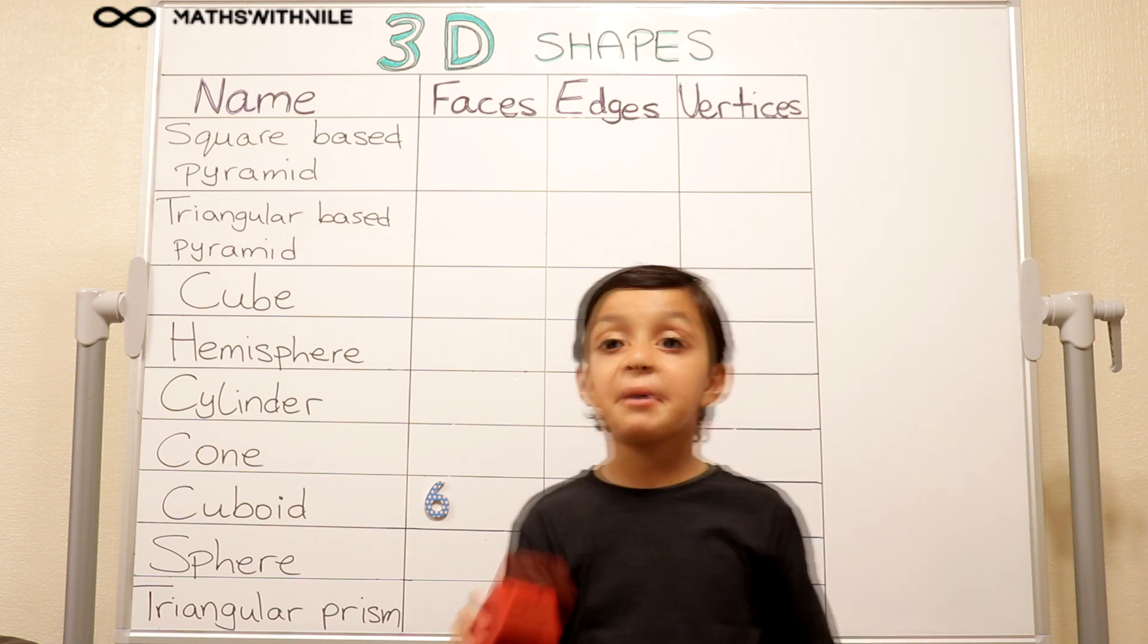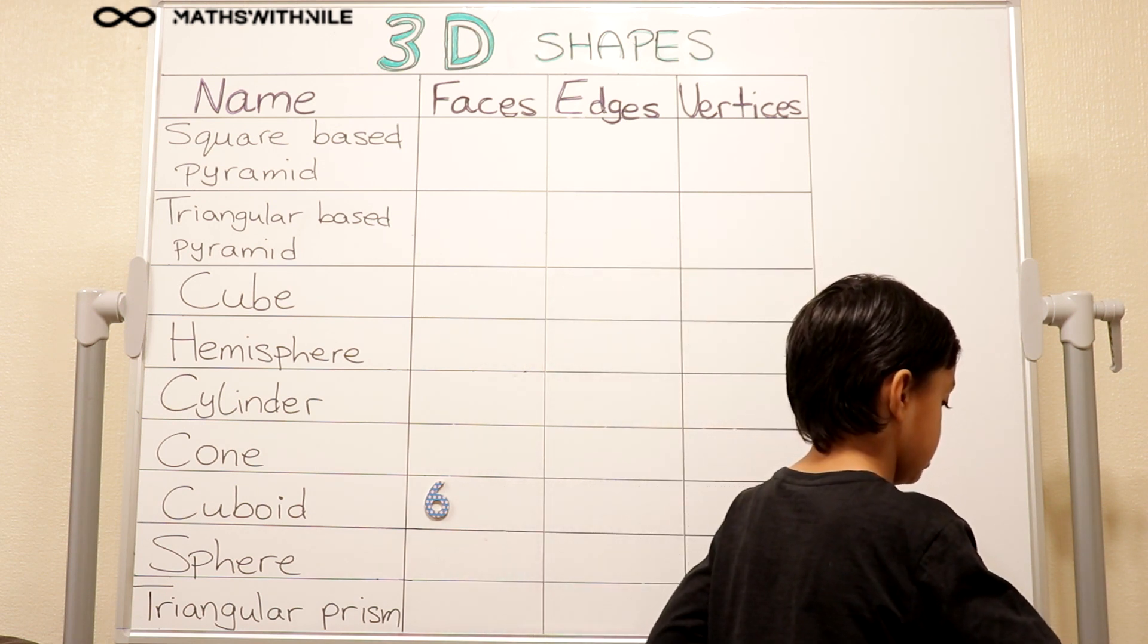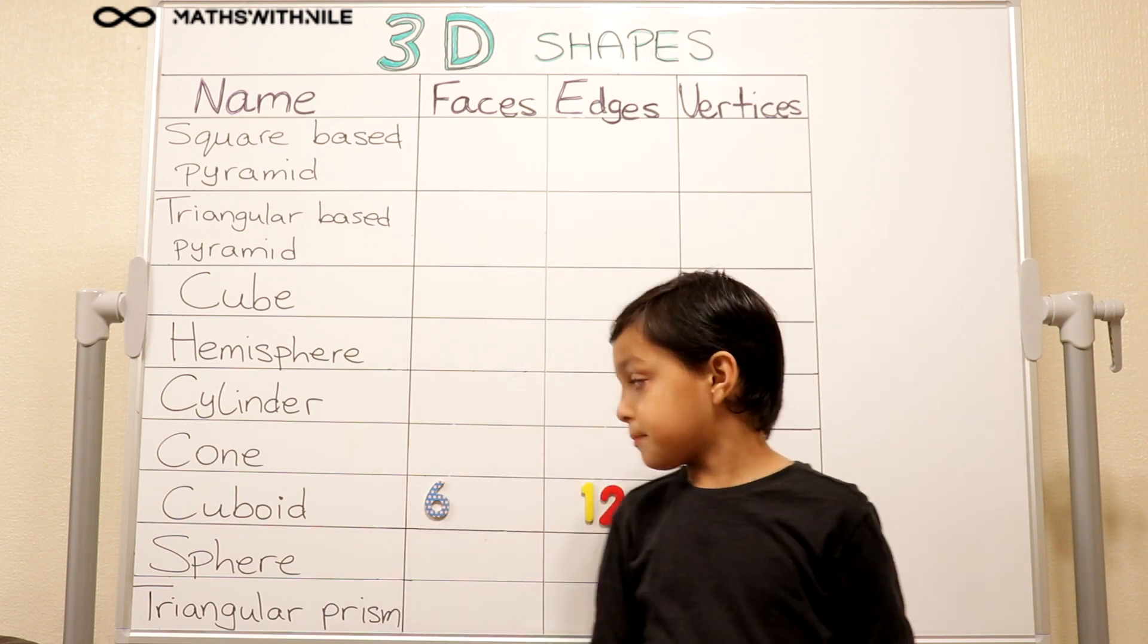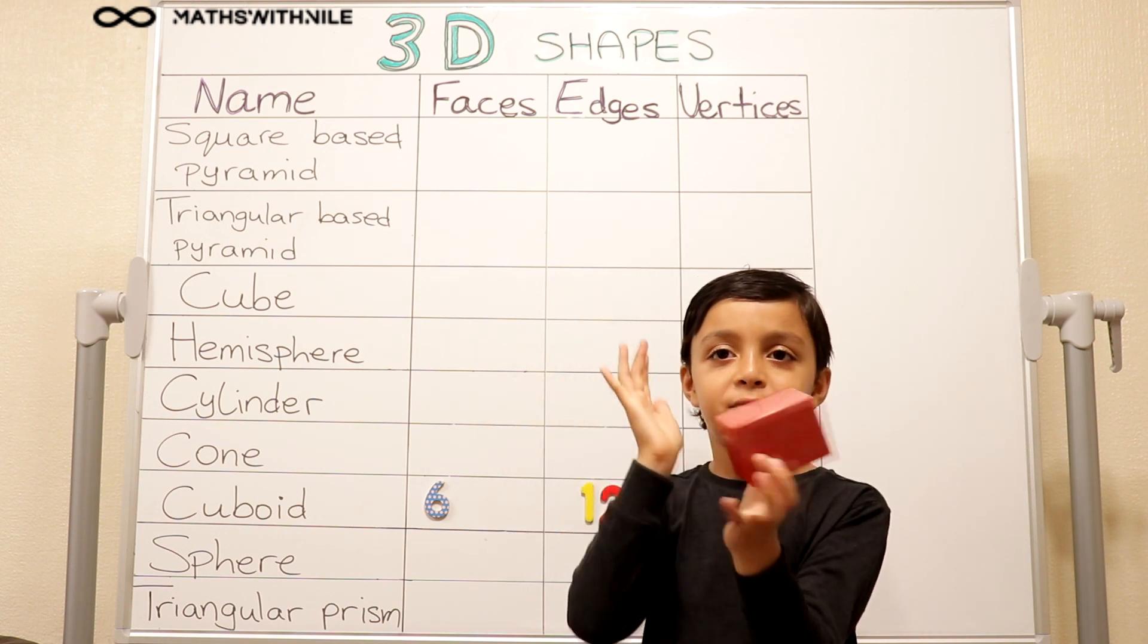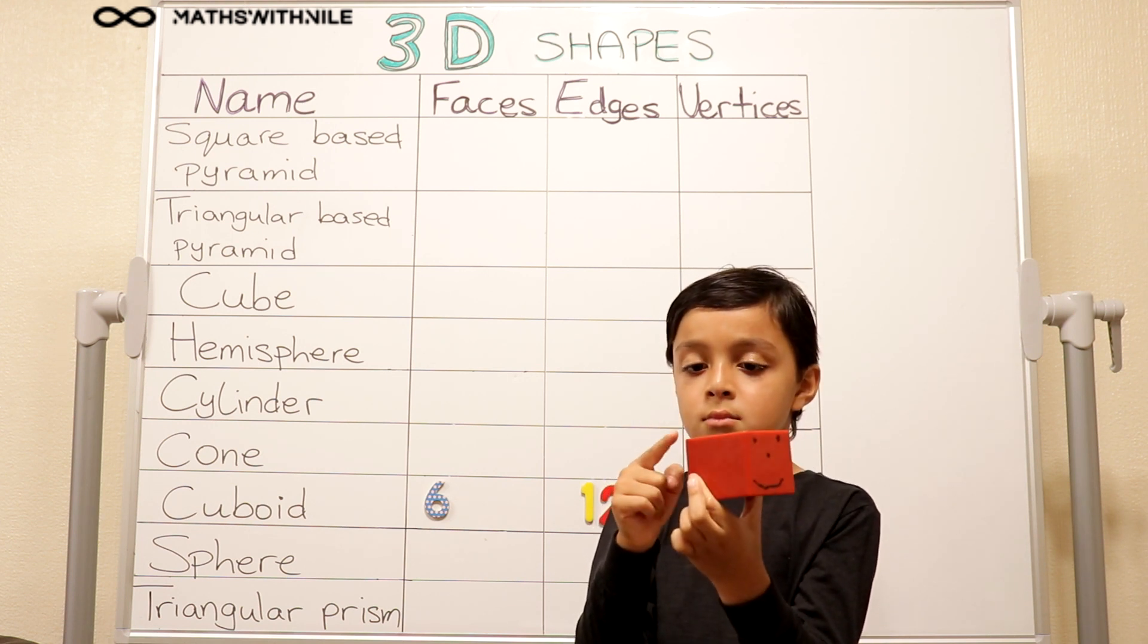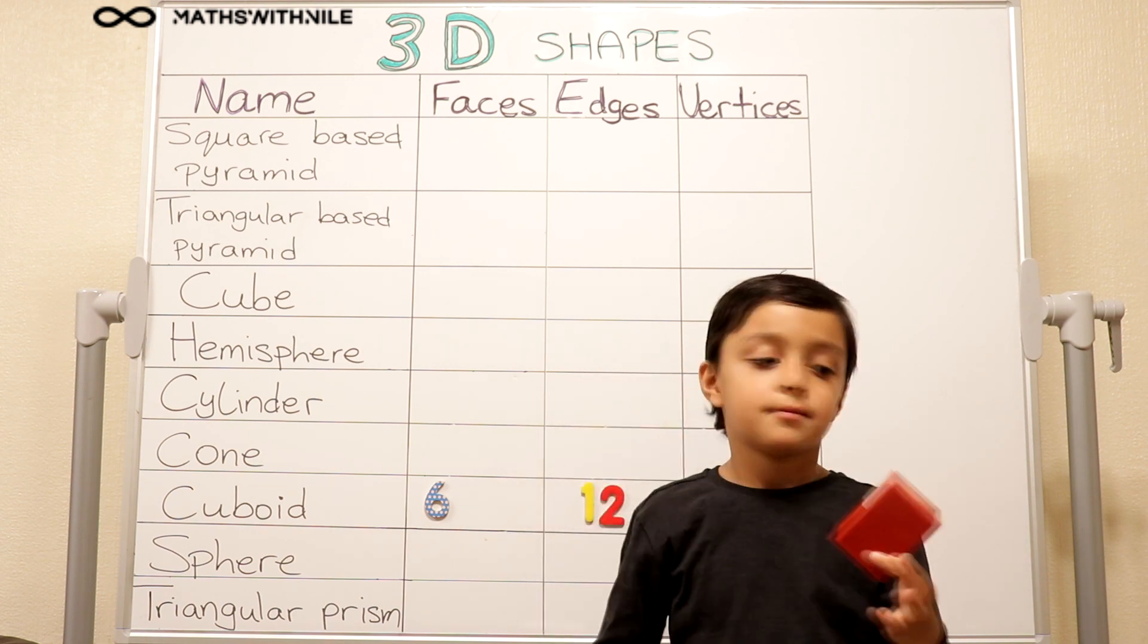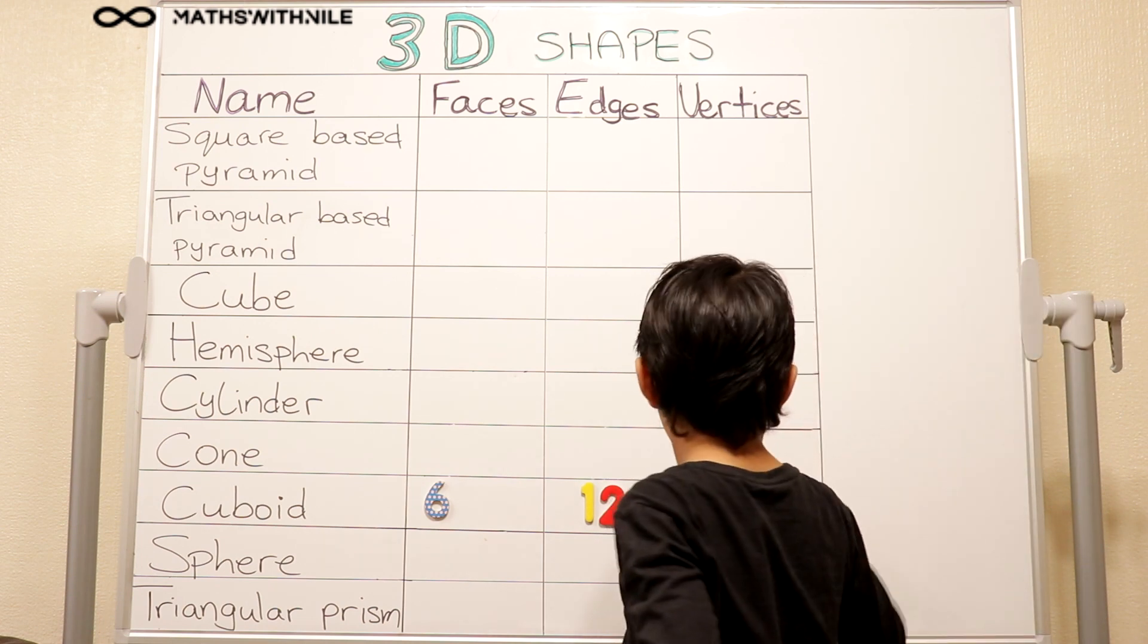Very good. So how many edges? Twelve. Put your twelve edges. And lastly, what are the vertices? The points. The little points where the edges meet. So how many vertices does that cuboid have? One, two, three, four, five, six, seven, eight. Put the cuboid down on the table and get an eight. Good job.